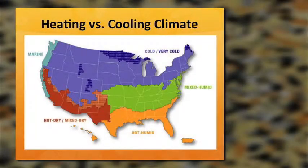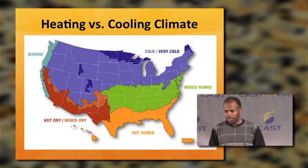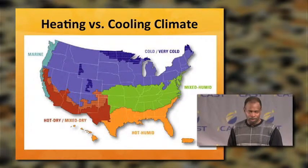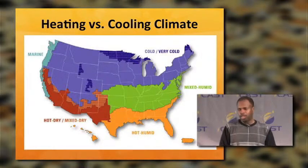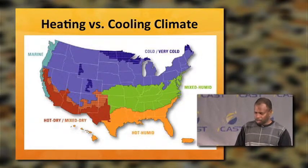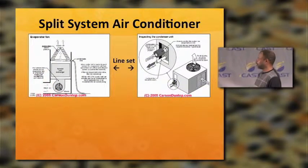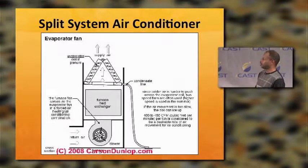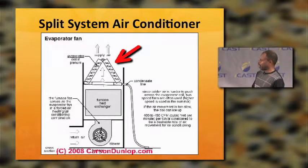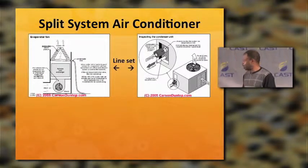Here's that climate map again. We have two ways to cool our houses: an evaporative cooler, also called a swamp cooler, which puts moisture into your house; and air conditioning, which cools and also dehumidifies your house. This is a split system air conditioner. The diagram on the left is the furnace usually in your basement with the evaporator on top — shaped like an A, also called the A coil. On the right side is the condenser outside.